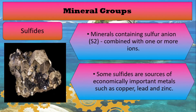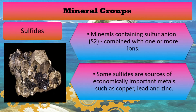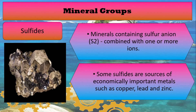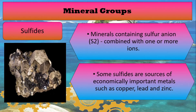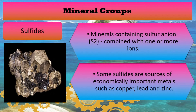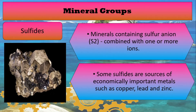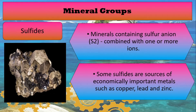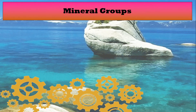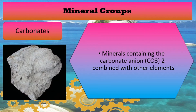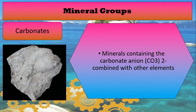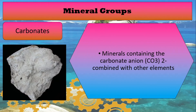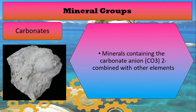Next is sulfides. Sulfides are minerals containing sulfur combined with one or more metal ions. Sulfides are sources of economically important metals such as copper, lead, and zinc. They are good chemical conductors and are used in thermoelectronic devices. Next are carbonates. Carbonates are minerals containing the carbonate ion combined with other elements. Carbonates are used in the development of drugs, pulp or paper-making industries, and in some glass-making.